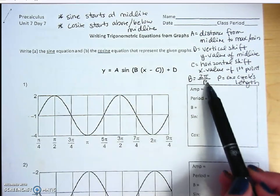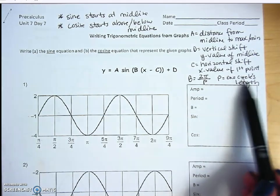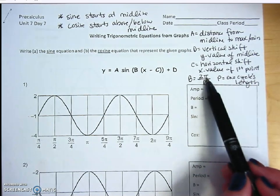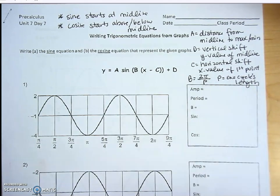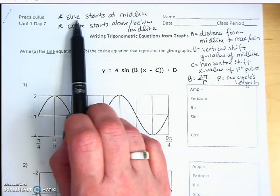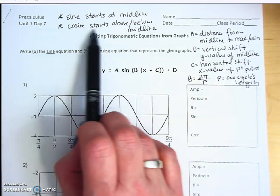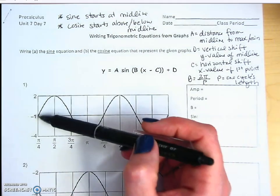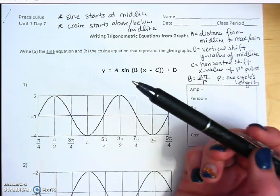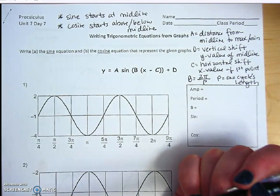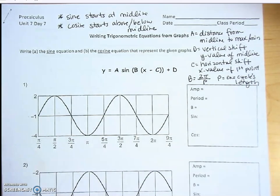B is for our horizontal stretch or compression, and we have the formula 2π over P, where P is one cycle's length. An original cycle is 2π; we divide it by the length of one cycle to get the ratio of its horizontal stretch or compression. Also remember: the sine graph starts at the midline, and the cosine graph starts above or below — usually at positive 1 above the midline, but at negative 1 below if it has a reflection.